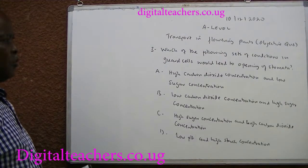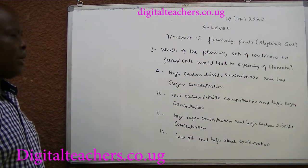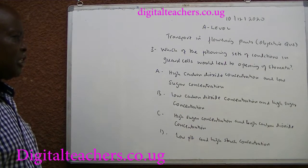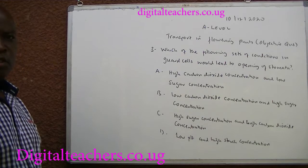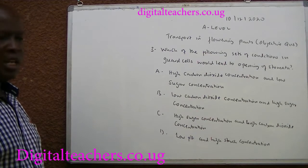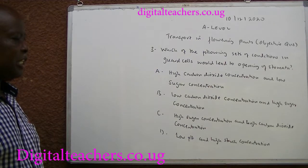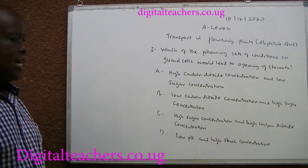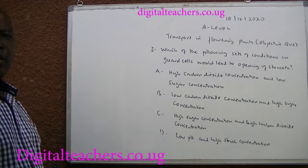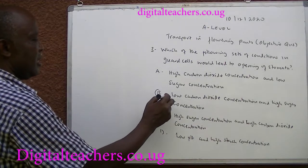Number 3. Which of the following sets of conditions in the guard cells would lead to opening of stomata? A. High carbon dioxide concentration and low sugar concentration. B. Low carbon dioxide concentration and high sugar concentration. C. High sugar concentration and high carbon dioxide concentration. D. Low pH and high starch concentration. You can pause and answer. The answer is B.